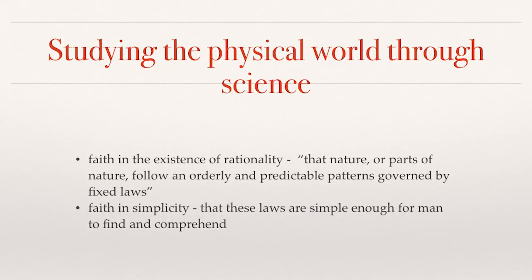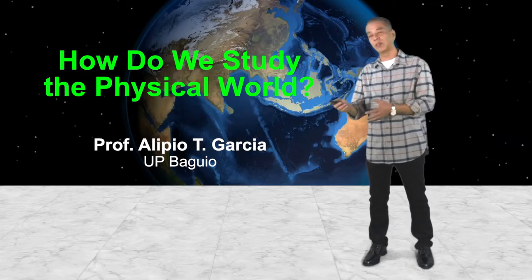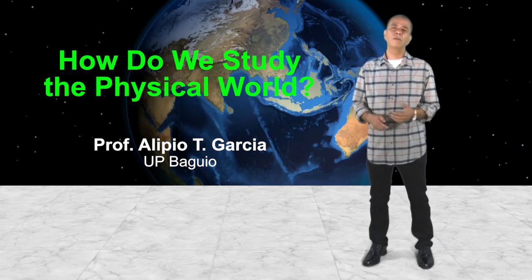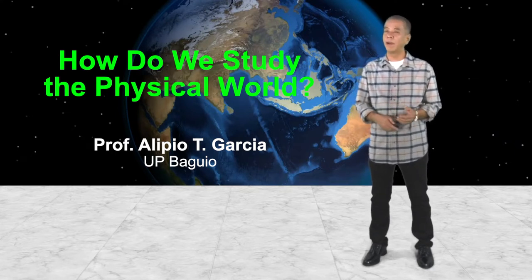There is also another underlying faith in simplicity. We assume that these laws are simple enough for man to be able to discover and comprehend. Simplicity is one virtue of a good theory. If a theory can explain a certain phenomenon but is made up of a lot of assumptions and adjustable parameters, then it's not a good theory. In science, there is more probability that a theory is correct when it is a lot simpler than a competing theory.